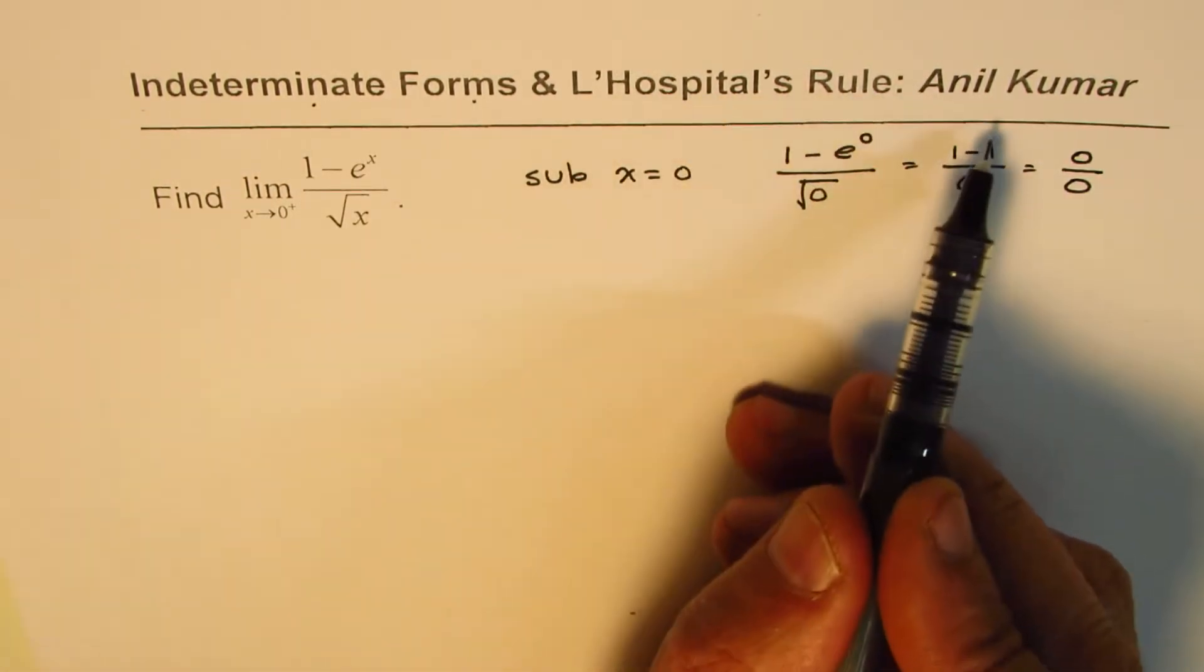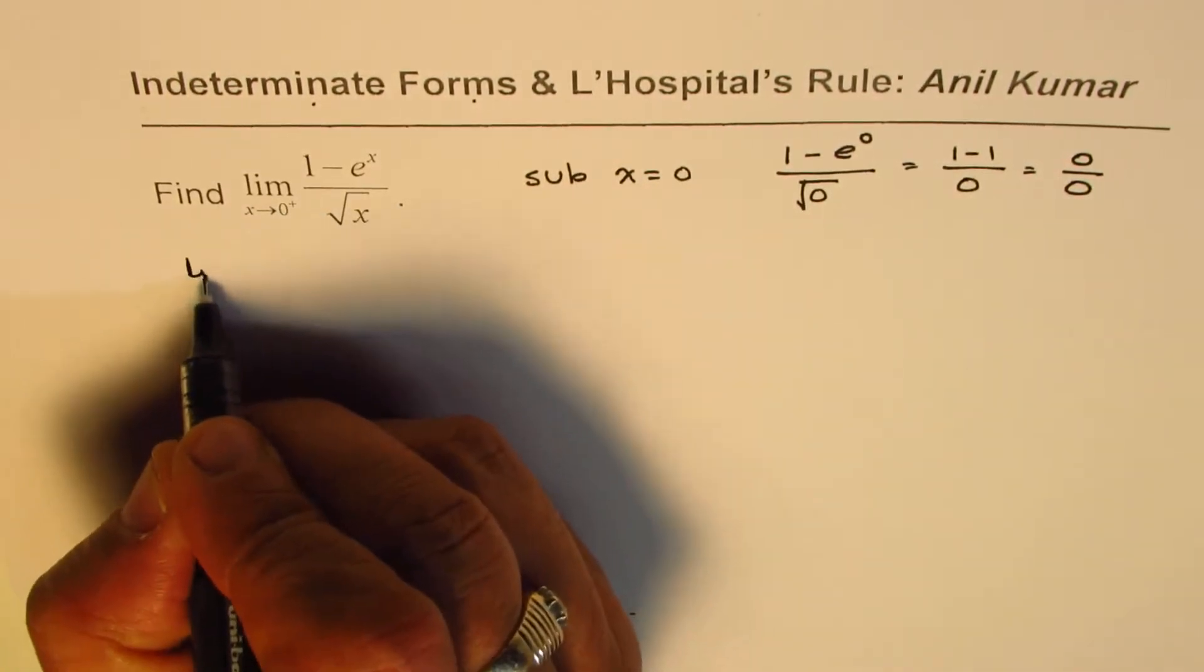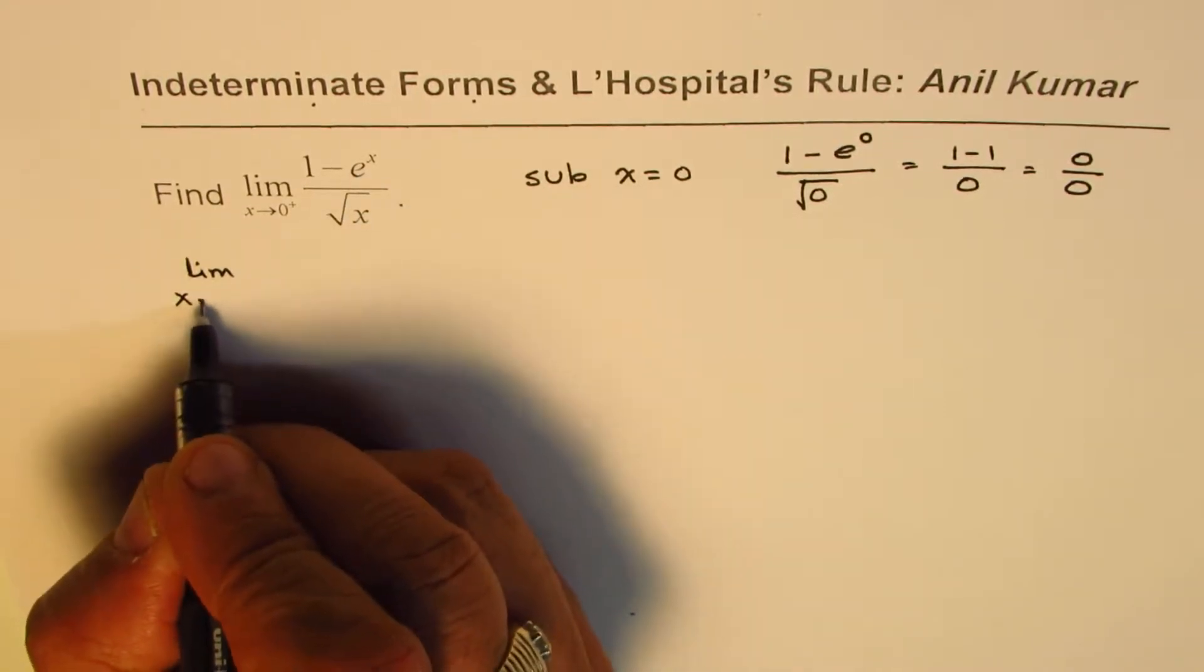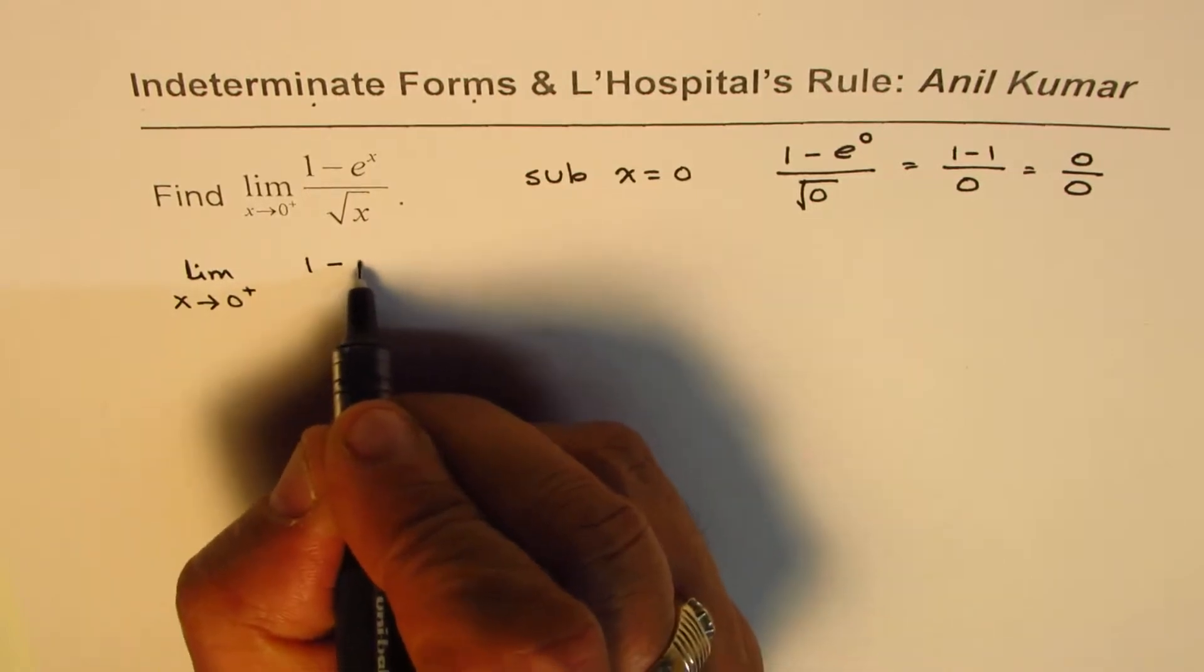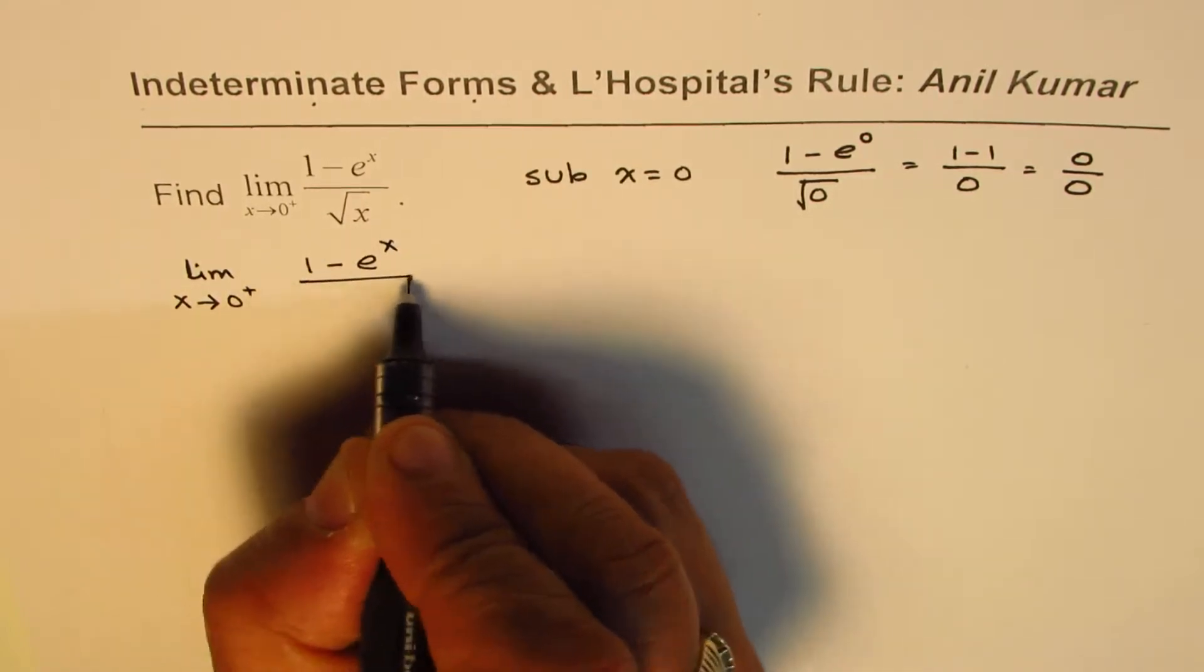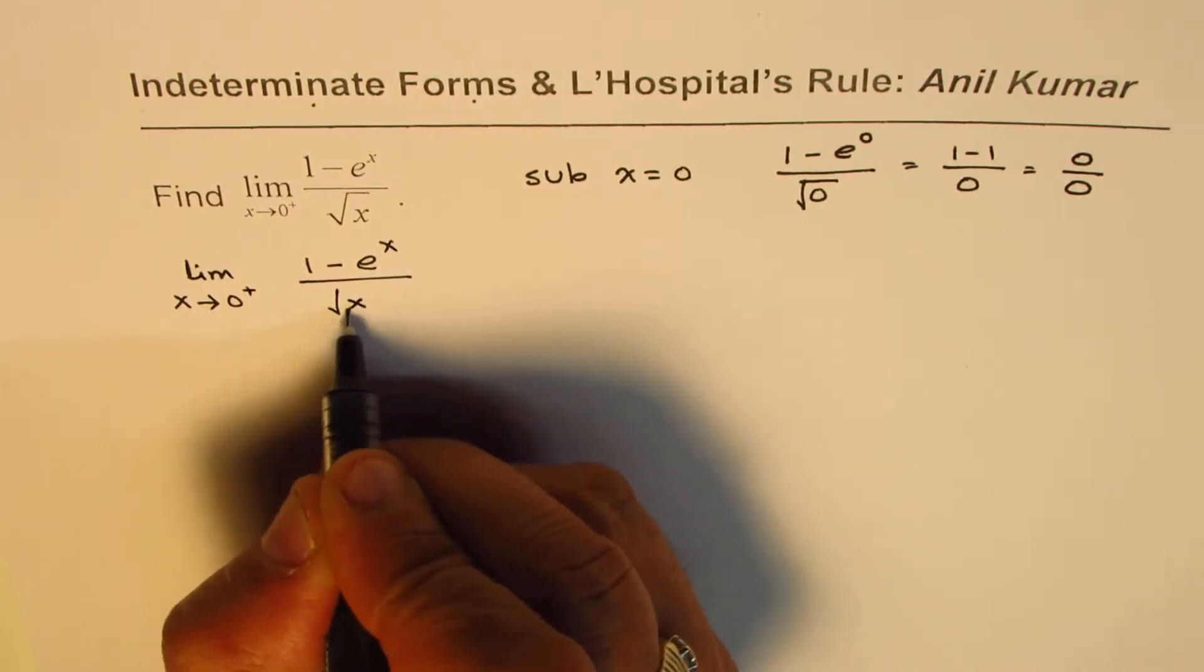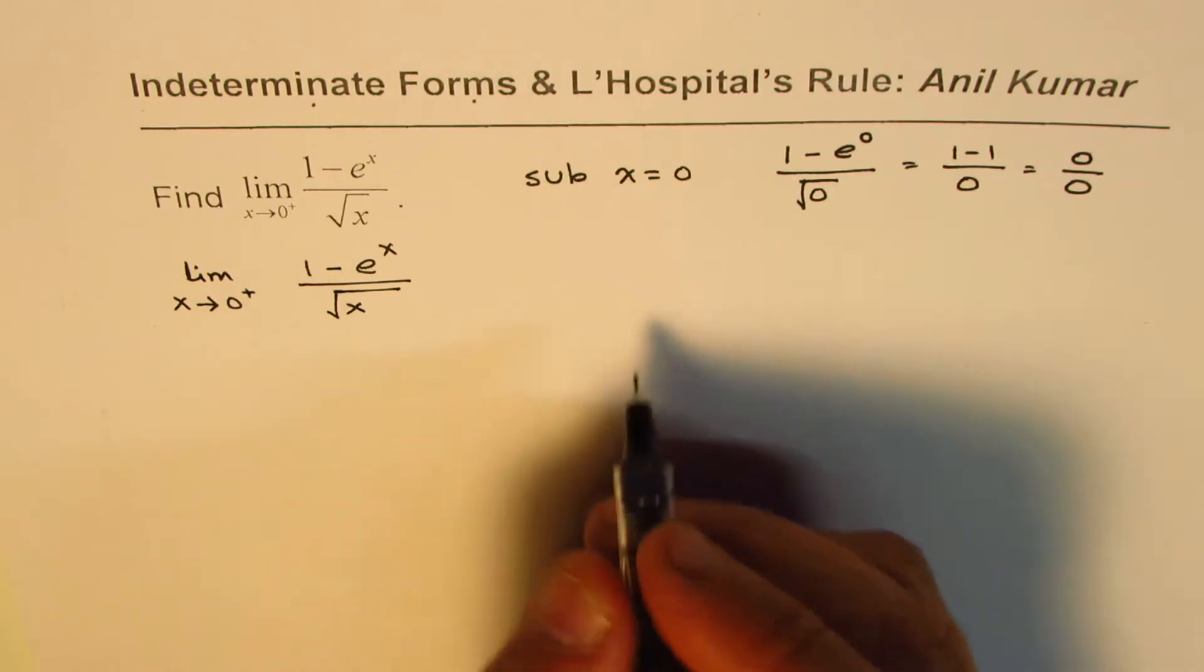now we can apply L'Hospital's Rule. The rule is that the limit of the quotient of two functions is the same as the limit of the quotient of their derivatives. So we could write this as equal to